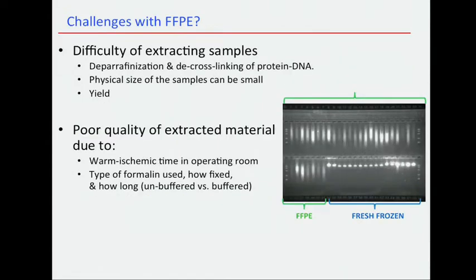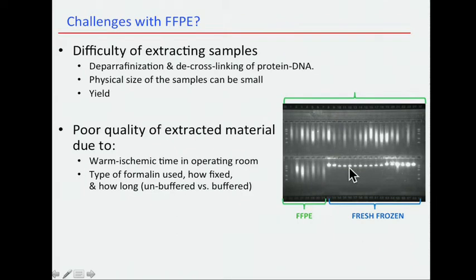So there are challenges working with FFPE. It's difficult to extract from the samples — you need to de-paraffinize them and de-crosslink the protein and DNA. The physical size of the samples within the paraffin block is sometimes small, and the yield of the DNA you can generate out of them is problematic. There's clearly poor quality of the DNA that comes out of it, as you can see from these smeared gel runs — the FFPE DNA fragments are broken compared to fresh frozen.